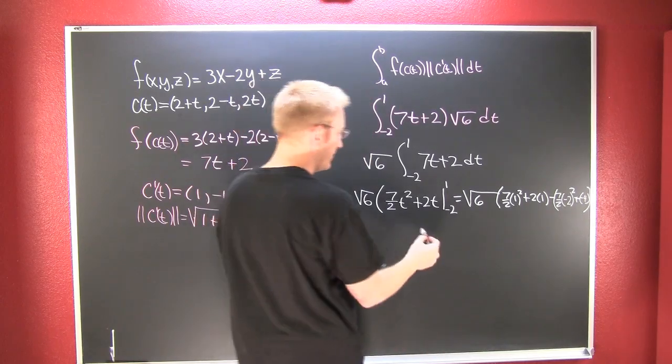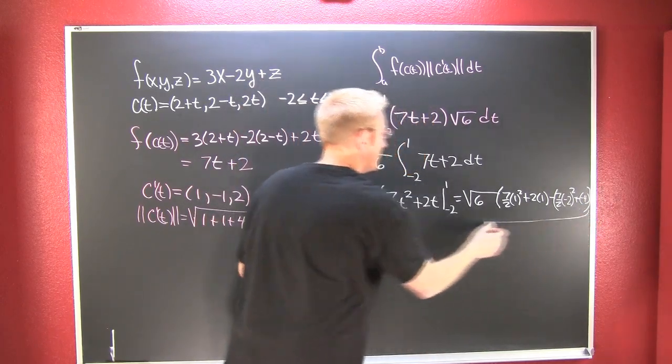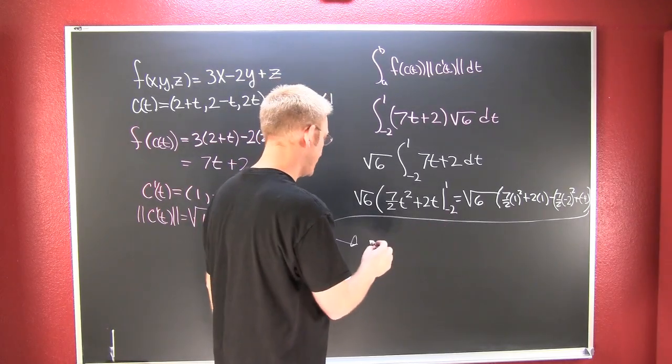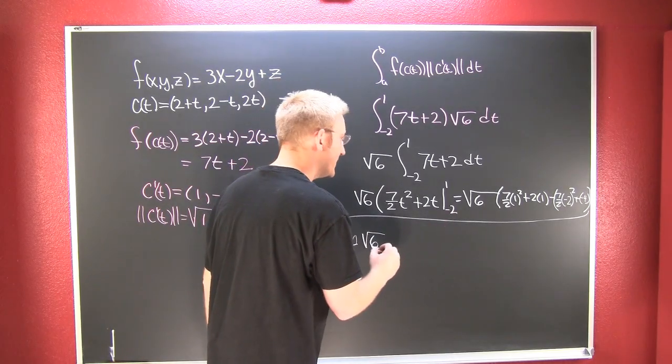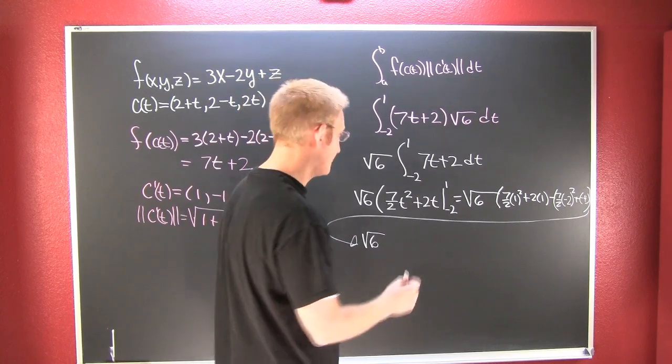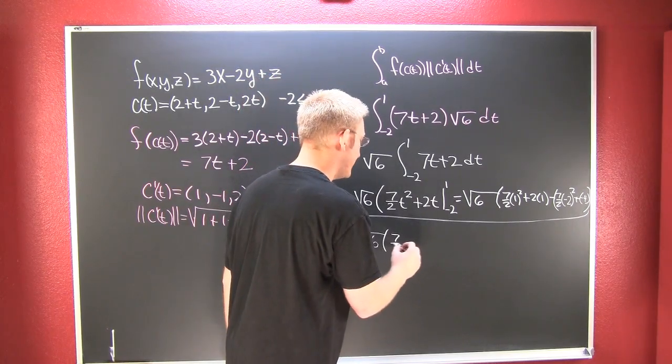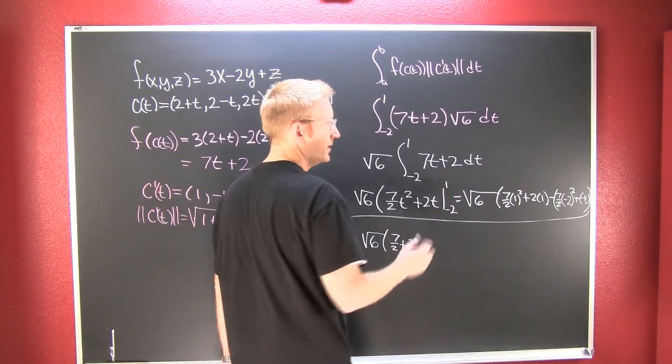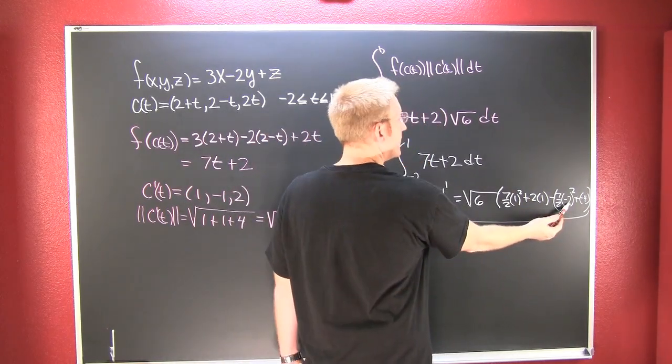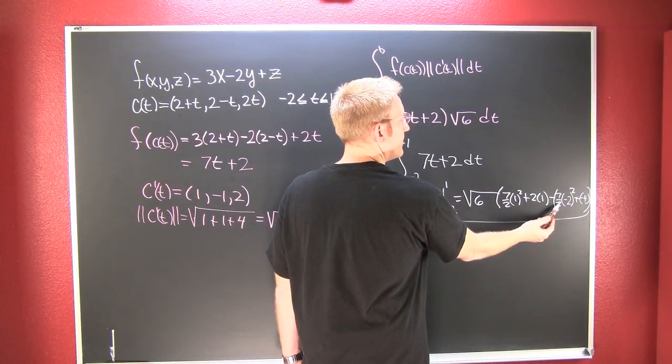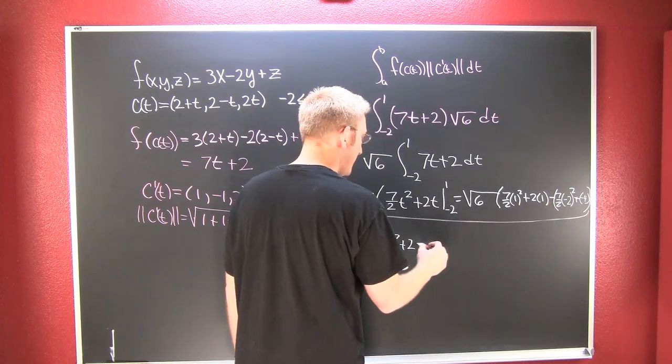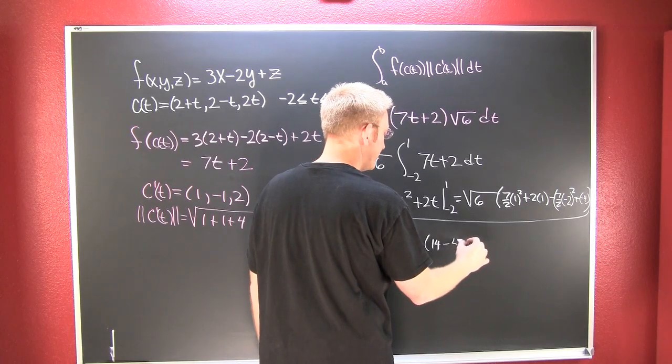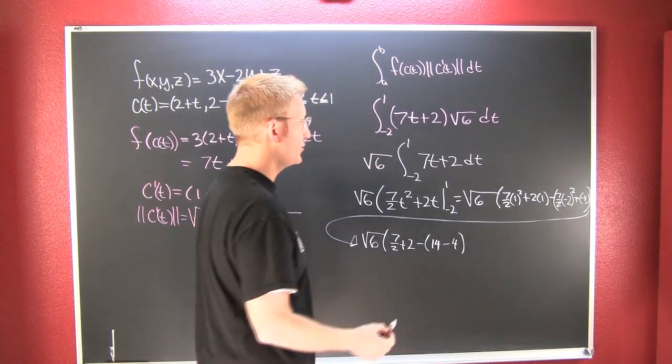Let's clean that up a bit more. I'll take it right on down here. That's going to give me the square root of 6 times 7 halves plus 2. Here that's going to give me 4 divided by 2 is 2 minus 14 minus 4.